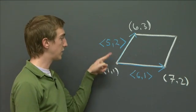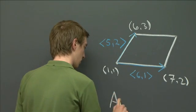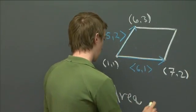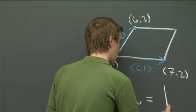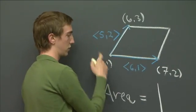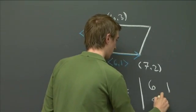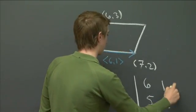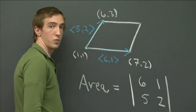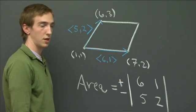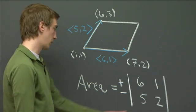So now that we have these two vectors, the area of our parallelogram is just going to be the determinant of our two vectors. Well, we'd better be careful. It's going to be plus or minus the determinant is going to be the area. So let's compute this determinant.